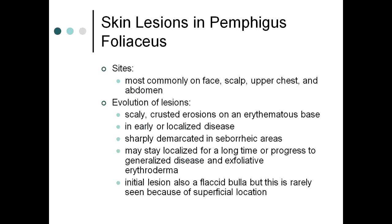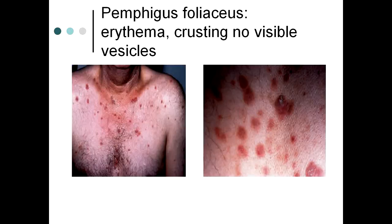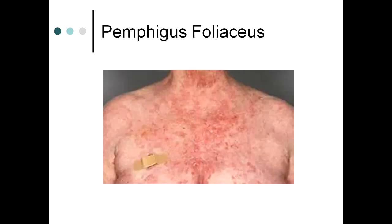In pemphigus foliaceous, the commonly involved seborrheic sites are the face, scalp, upper chest, and abdomen. Lesions are scaly, crusted erosions on an erythematous base. In earlier localized disease they are sharply demarcated and may stay localized for a long time before progressing to generalized disease or even exfoliative erythroderma. The initial lesion is also a flaccid bulla, but it is rarely seen due to the superficial location.